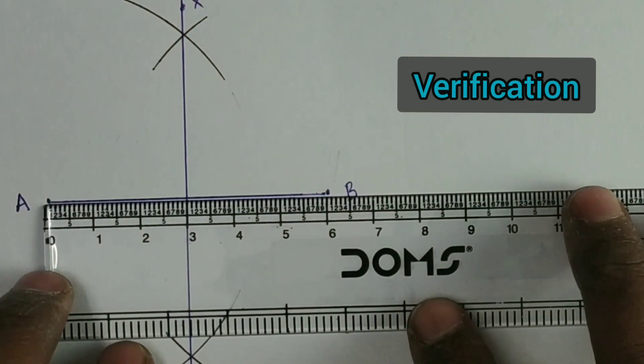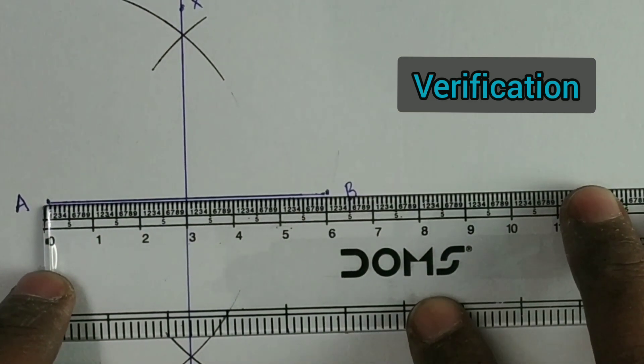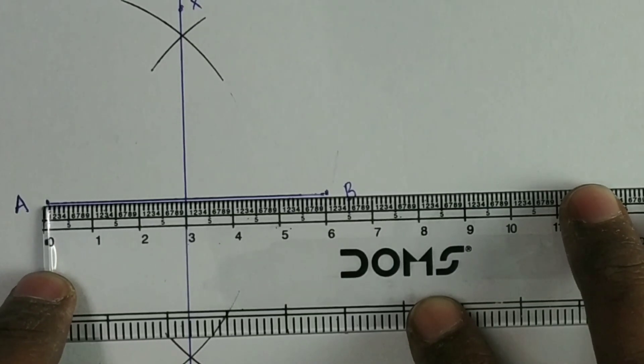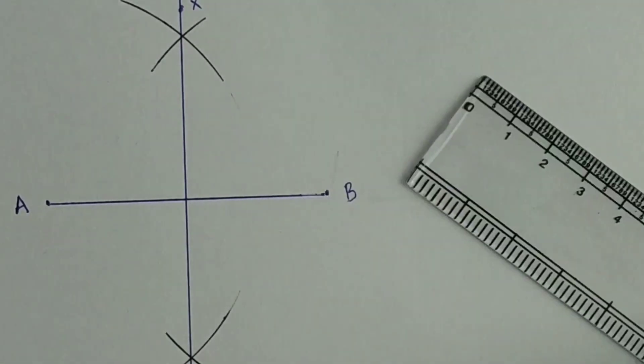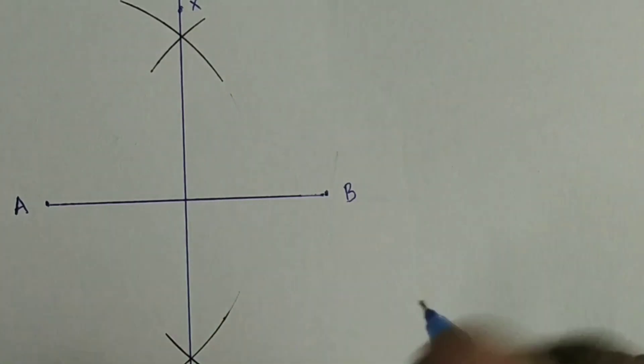And XY divides the line segment AB into two equal parts. So, XY is the perpendicular bisector of line segment AB.